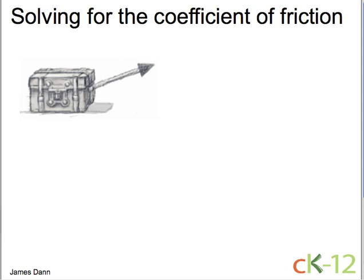Let's solve this problem here where the box is being pulled with a force that's not horizontal. And let's set up the problem. Let's say that this force here is 100 newtons and it's being pulled at an angle of 30 degrees to the horizontal.